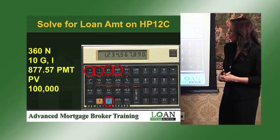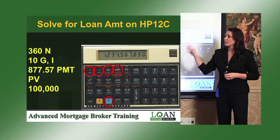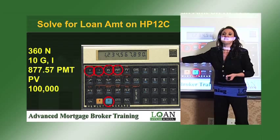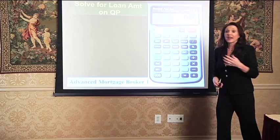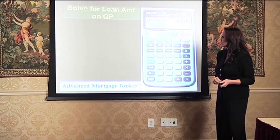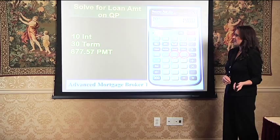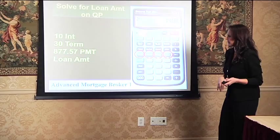Once you get that loan amount, if the borrower is coming up with a down payment, you're going to divide the loan amount by the loan-to-value. So if the borrower is coming up with 20% down, take 100,000 and divide by 0.8 — that's going to equal the price of the property the borrower can afford. On the Qualifier Plus, same formula: 10 interest, 30-year term, $877.57 payment, solve for loan amount. This is the most user-friendly calculator available today, and the answer is going to come up to $100,000.